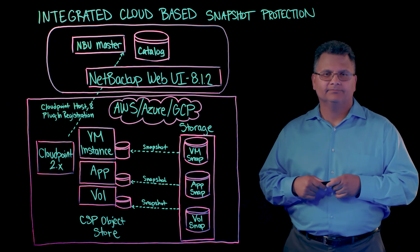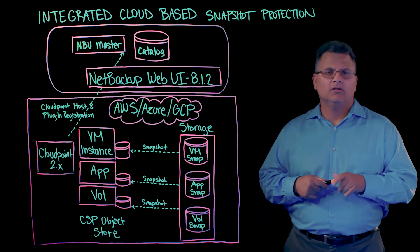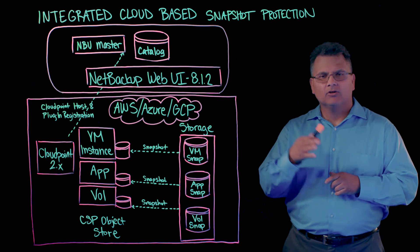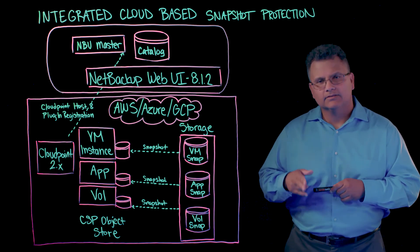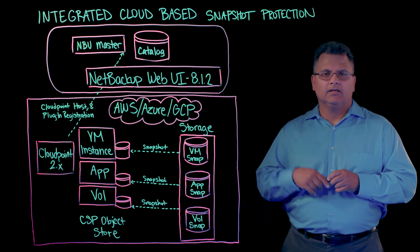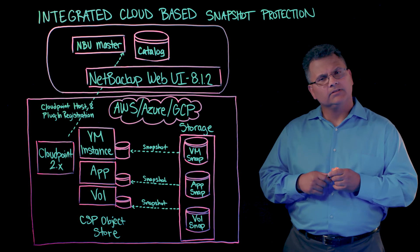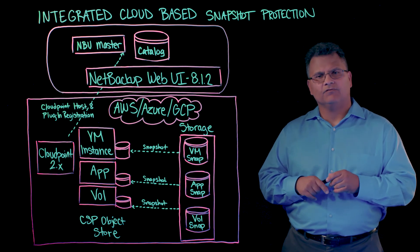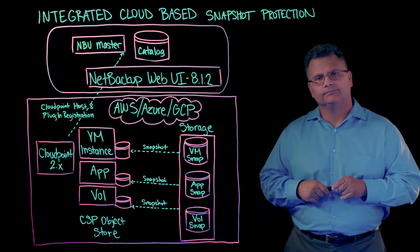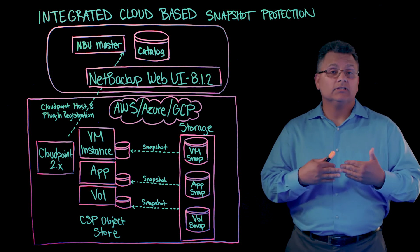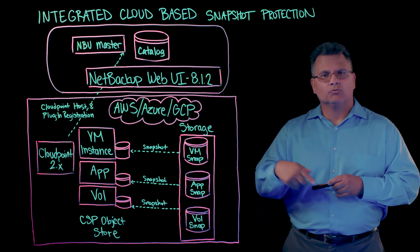As we began our development journey, we wanted to make sure there were some key issues we addressed. One, we wanted to make sure we could protect all the various workloads that were in the cloud a customer may have. Secondly, it was important that we delivered application-consistent snapshots. Third, we wanted to deliver enterprise-class features — features that they've come to know on-prem, but now let's do that in the cloud. We also needed to give them self-service capabilities, allowing that cloud admin to do his work on his own.